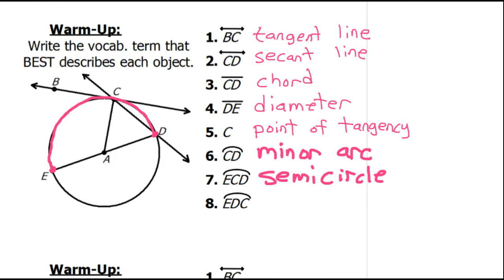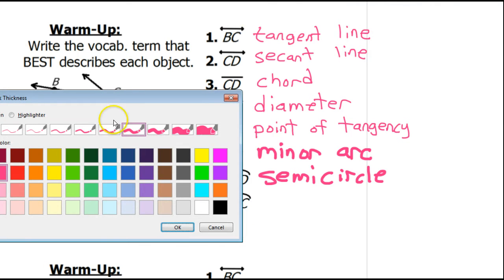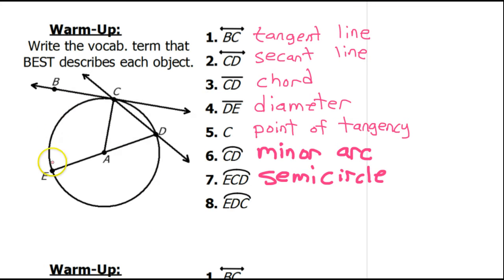Now, problem number 8. Let's glance at arc EDC. So, that means that we have to start at point E and pass through point D before we arrive at point C. So, this is an arc that is bigger than a semicircle. It's more than 180 degrees. That makes it a major arc.